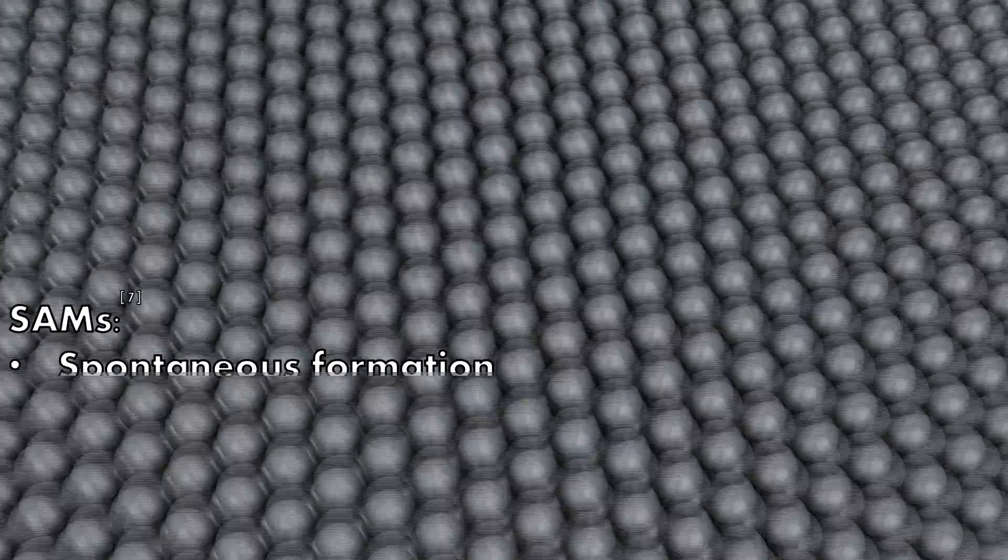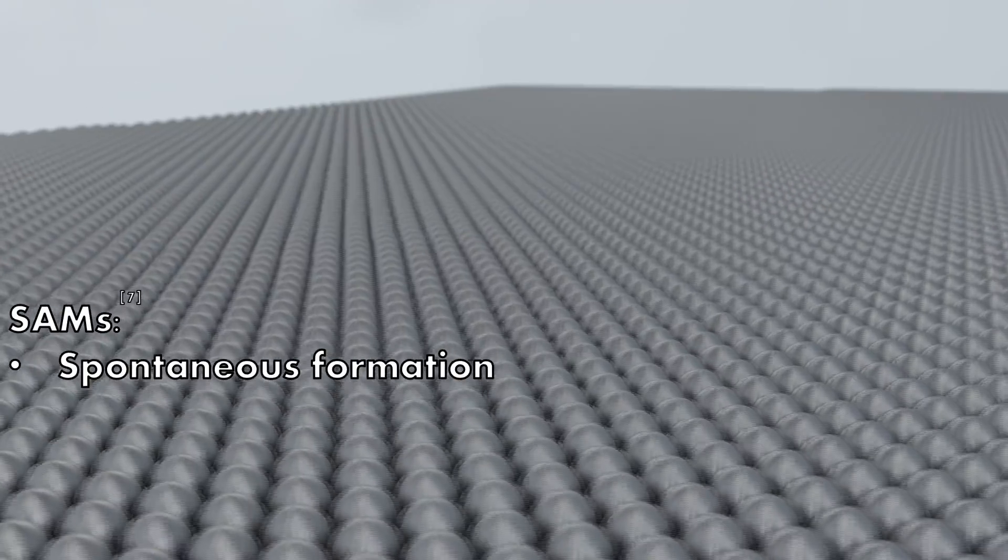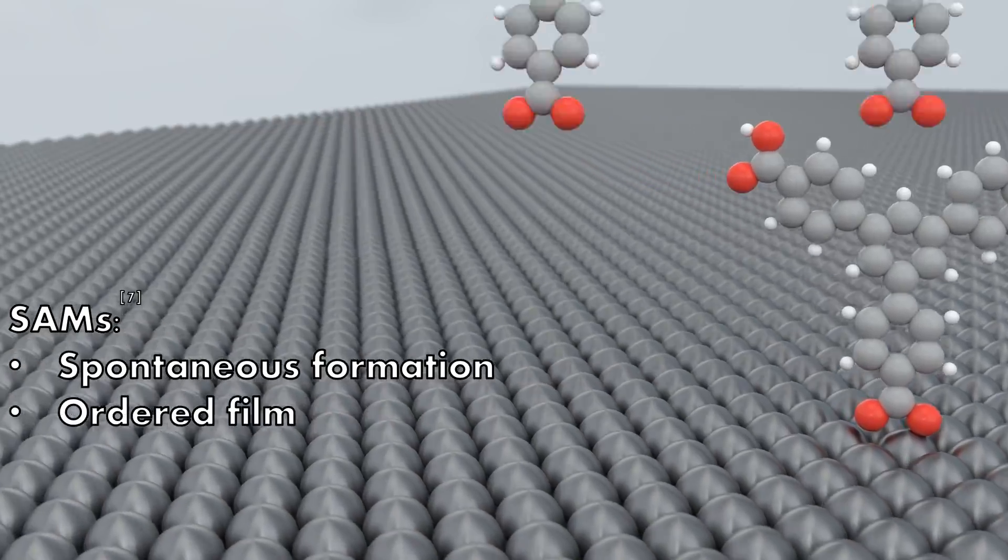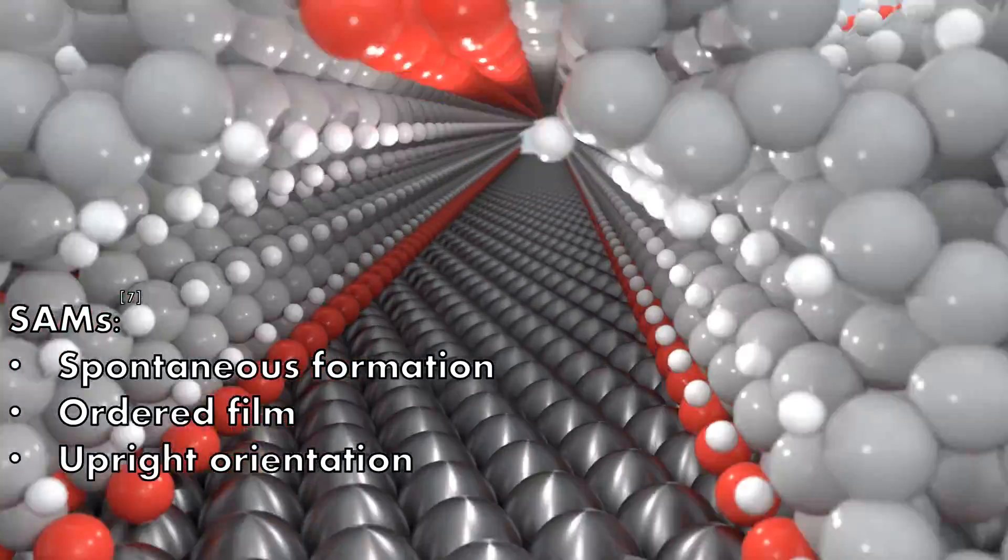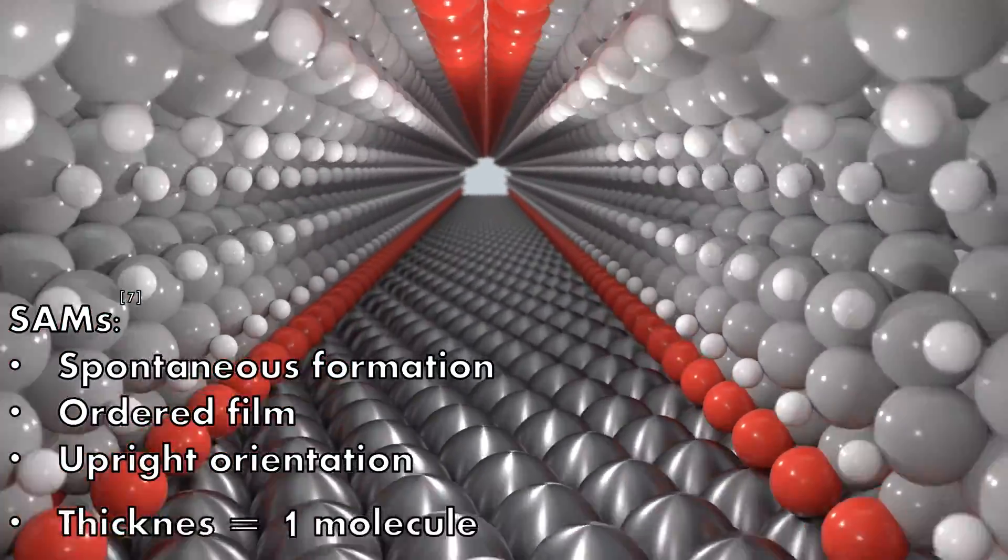SAMs spontaneously form when a surfactant absorbs on the surface. The molecules create an ordered film and have an upright orientation. SAMs are molecular layers with a thickness of one molecule.